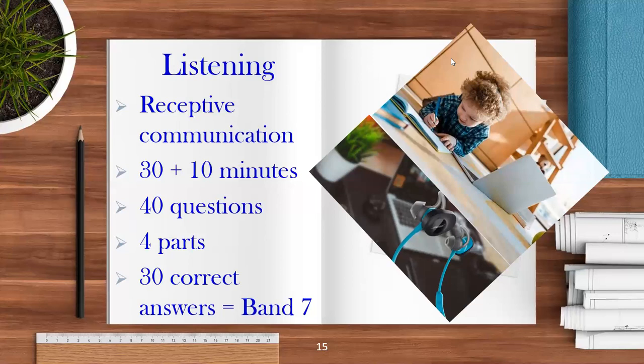To be able to get a band 7, which is a minimum target, you need to answer 30 questions correctly to get you a band 7. To get band 9, you need 39 to 40 correct answers. And this is possible.